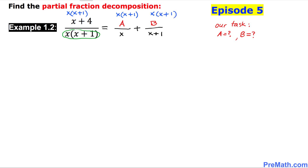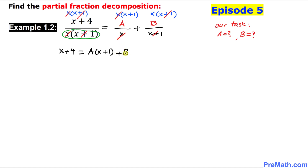Now, as you can see, this x cancels out with this x, and x plus 1 cancels with x plus 1. We are left with x plus 4 on the left hand side. On the right hand side, x cancels out, giving us a times x plus 1, and x plus 1 cancels out, giving us plus b times x.